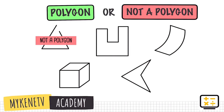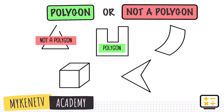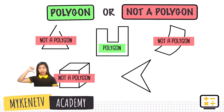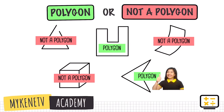Next, is this a polygon? Yes, it is — it is a closed plane figure made up of straight lines. How about the third one? It's not, because it has curved lines. How about the fourth figure? It's not, because it is already a solid or three-dimensional figure. And the last figure — this is also a polygon because it is closed, it is flat, and it is made up of straight lines.